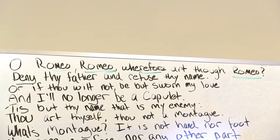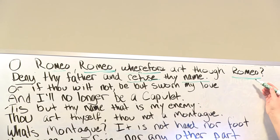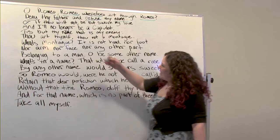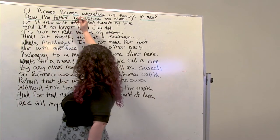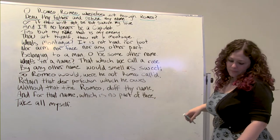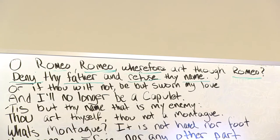Let's look at the next line: Deny thy father and refuse thy name. A couple words really stand out to me. The word 'refuse' is really interesting, and 'name' — we've already had names a lot. We had Romeo. The word 'deny' is a strong word, and 'father.' So our telegram so far reads: Romeo, Romeo, wherefore Romeo? Deny father, refuse name. That actually creates a pretty clear picture of what's going on.